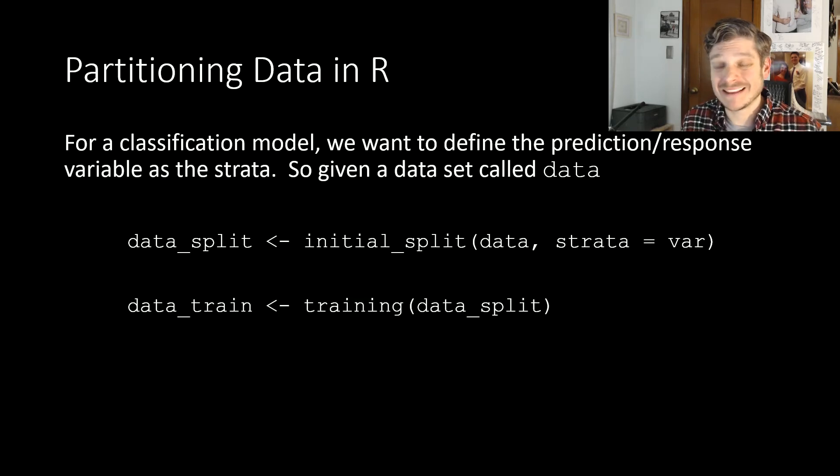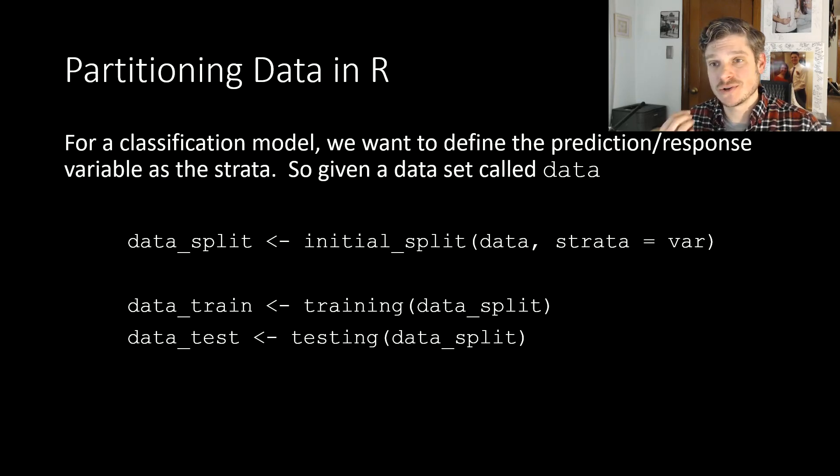Then from there, so again, like I said, I prefer to just put the underscore at the end. So my data, my training data will be data_train. And again, your data set might not be called data, but the underscore train part, I think, is nice. And again, you use the training function, and it pulls from the data split and pulls just the training data and puts it into a data frame for you. And similarly, testing, if you run the testing function on your data split, again, it's going to return just the data frame of just your testing data. So again, it separates that data for you. So now you have two separate data frames from your initial data frame. You now split it into two separate ones using this set of functions.